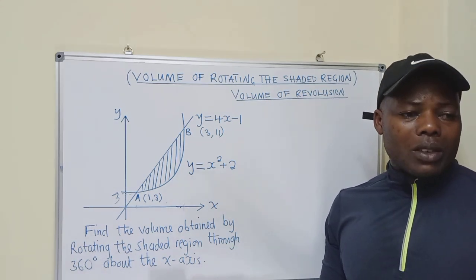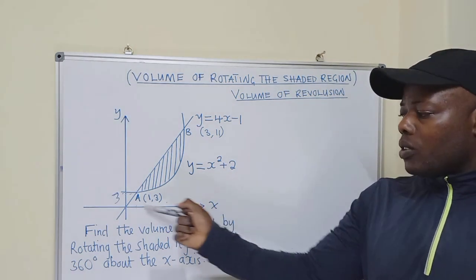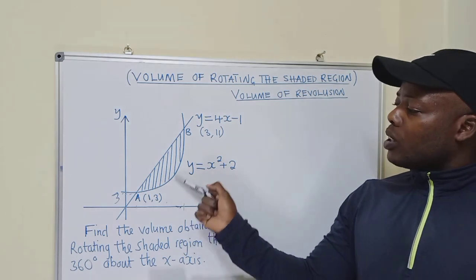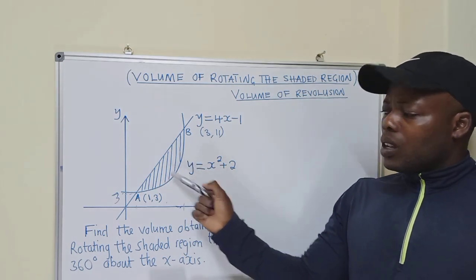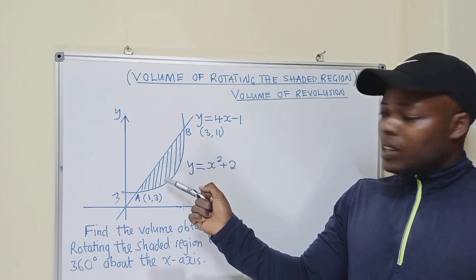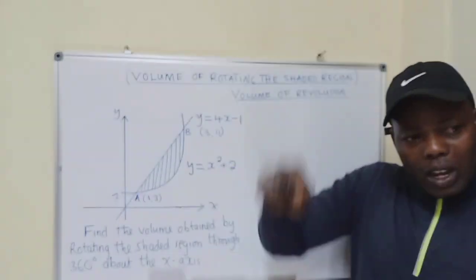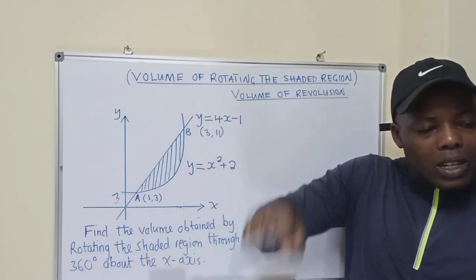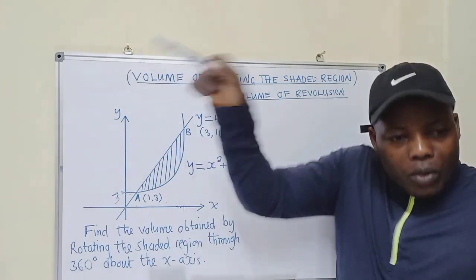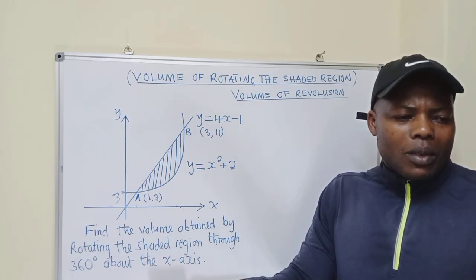Do you know what it means? So it means, if you can see this is the x-axis and we've got the y-axis. They're saying if this shaded region was rotated around this x-axis, it will form a certain shape. Now we need to find the volume of that shape. Do you get what it means? Yes.